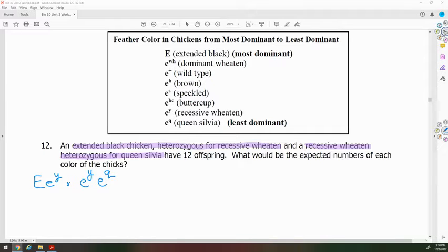They have 12 offspring. What would be the expected numbers of each color of the chicks? We need to put their alleles into a Punnett square to find out.